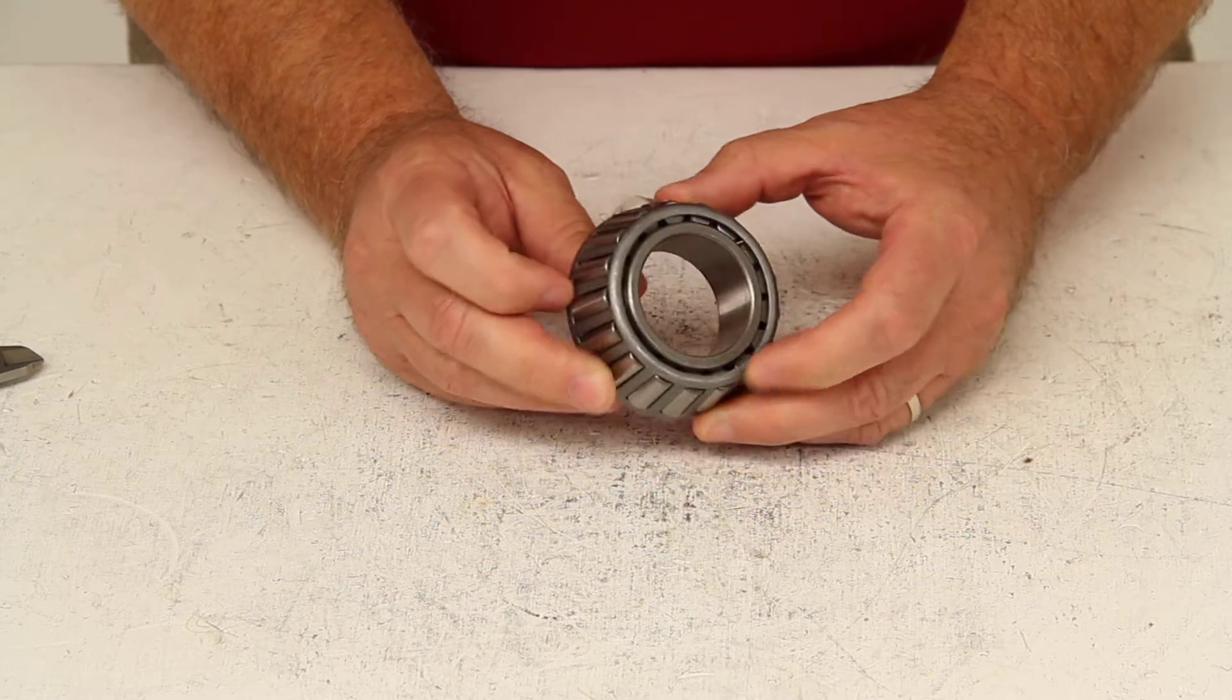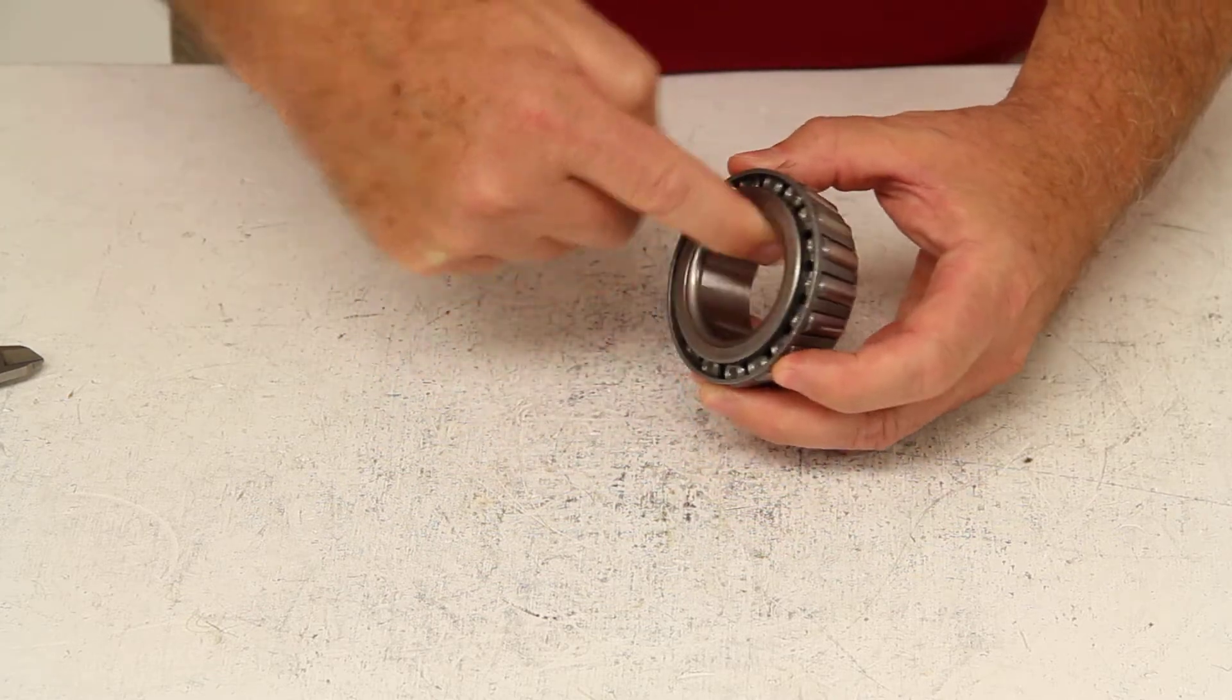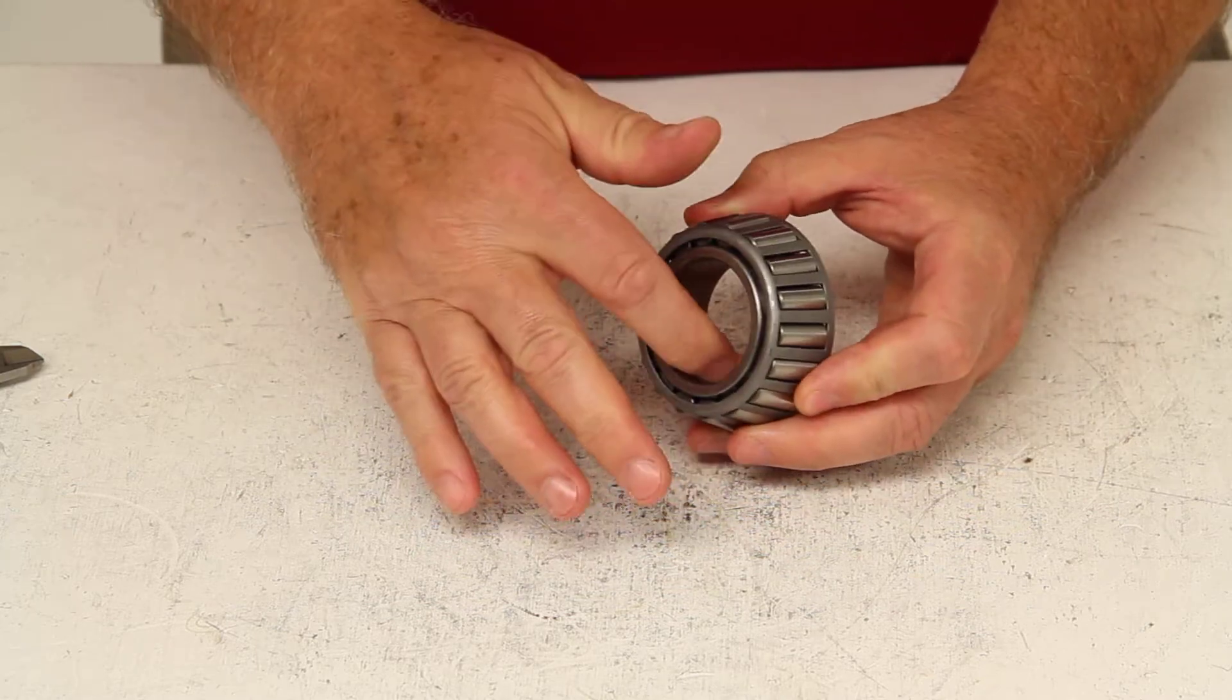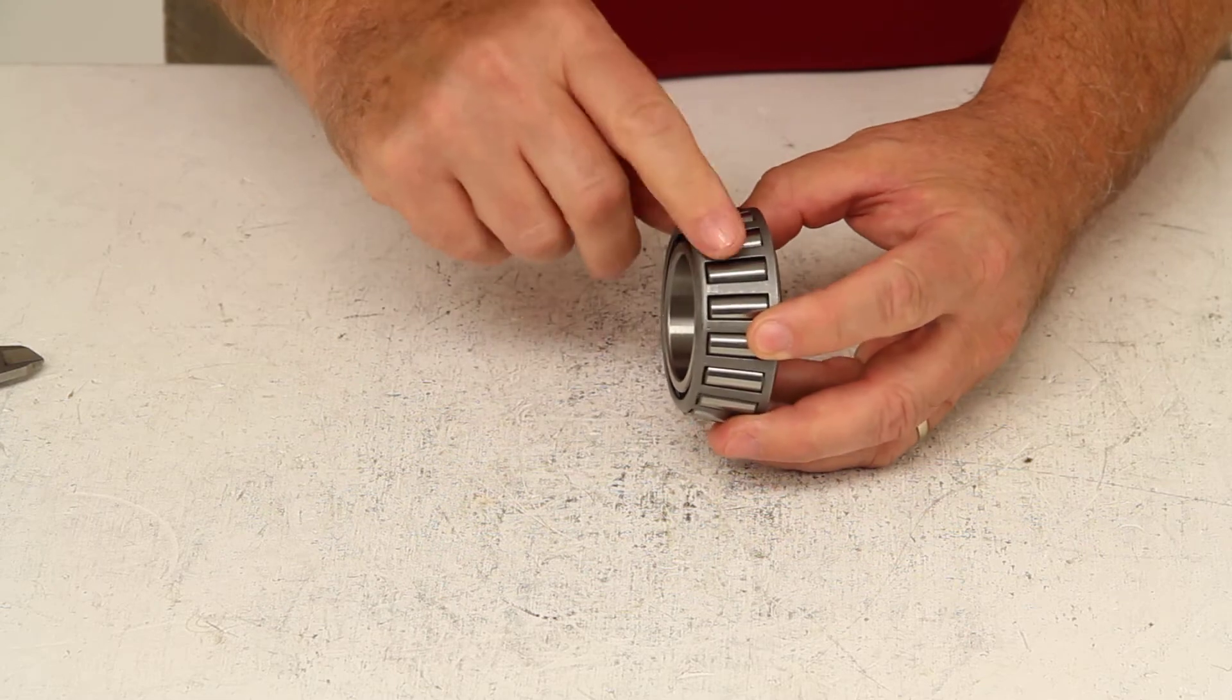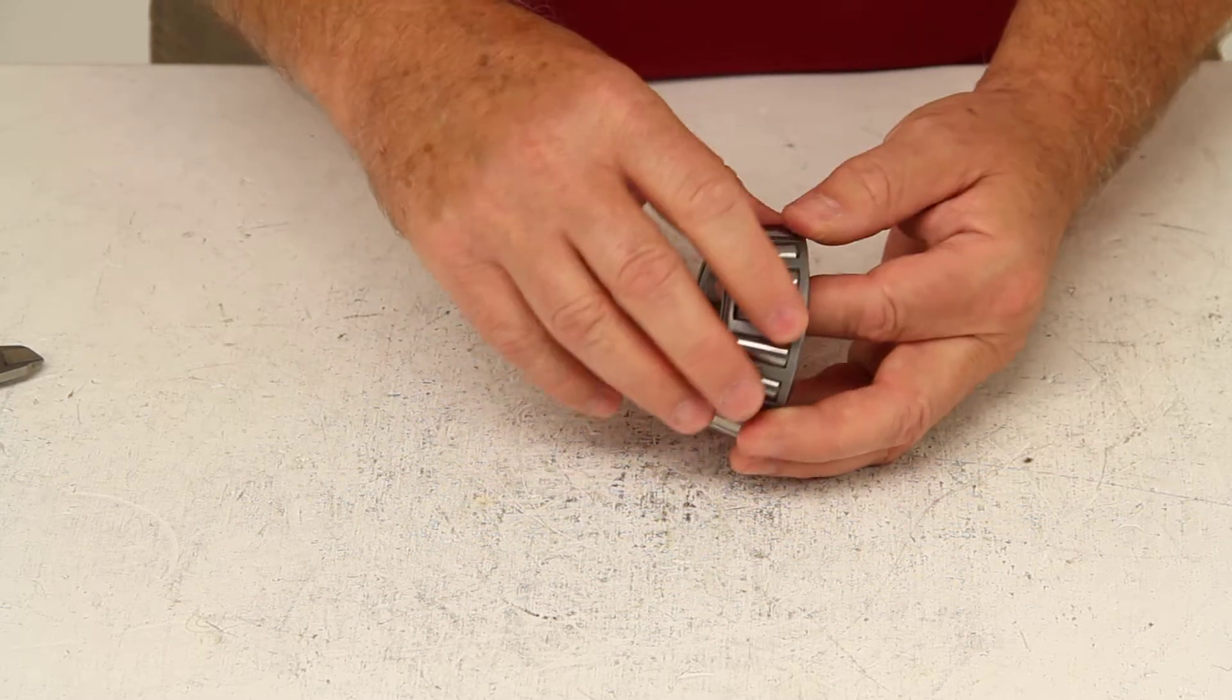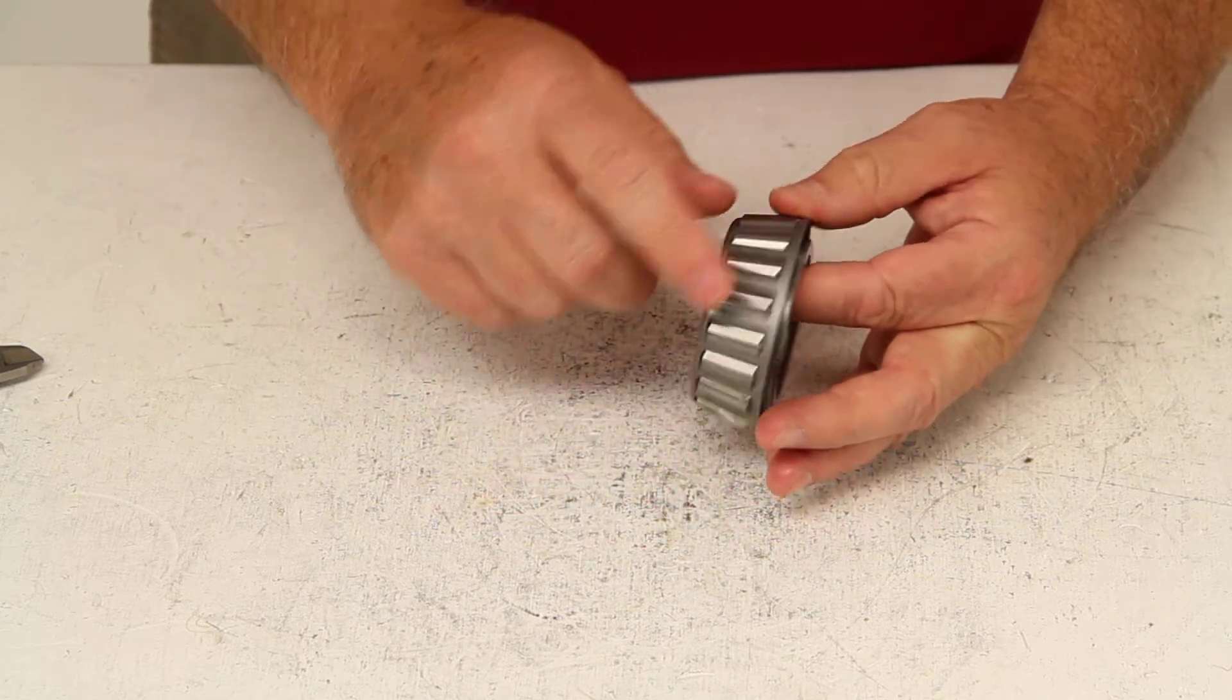This bearing does consist of three pieces. The inner ring, which is this part right here that slides over the spindle of your axle, the actual rollers themselves, and then the cage or roller retainer that holds the rollers in place.